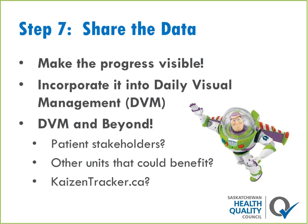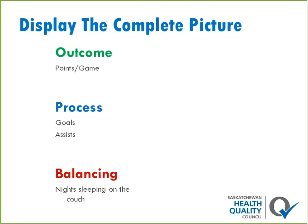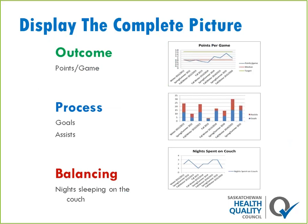That was a lot of information, but we're almost done. Step seven is about sharing the data you've analyzed so it can be discussed and used — there's no point collecting data if you're not going to use it. Sharing data is about making progress visual. Incorporate it into daily visual management, or think about who else might benefit. Are there patient stakeholders, other units, or other regions that could benefit? Could you put it on kaizantracker.ca so others can see the work and steal shamelessly? When displaying data, show the complete picture — the outcome, process, and balancing measures. Have the outcome measure at the top, process measures below that, and balancing measures below that. This creates a line of sight from smaller projects to your bigger outcome goal.